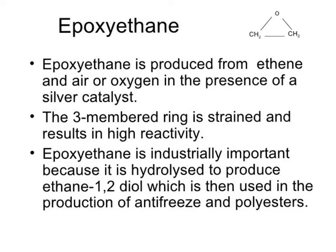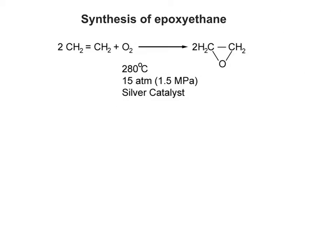The three-membered ring is strained. The bond angles are strained at 60 degrees, and therefore it's very easy to break this ring open, which results in high reactivity and high toxicity as well. In the presence of a silver catalyst and a modicum of pressure and high temperature with a supply of oxygen, ethane gas will turn into epoxy ethane.